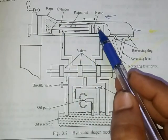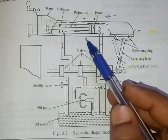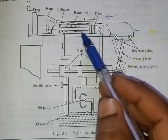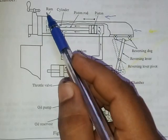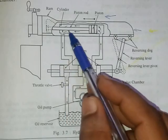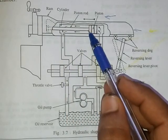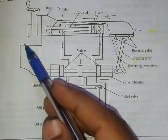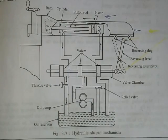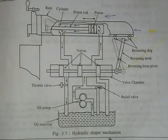Next is the arrangement of the ram body. This is the total ram body which includes the piston-cylinder arrangement. This is the piston, this zone is the cylinder, and the piston is connected to the ram by means of a piston rod. This is the working table.